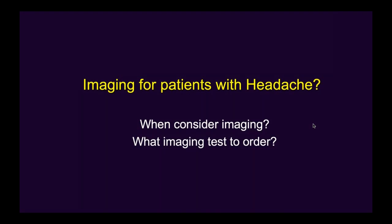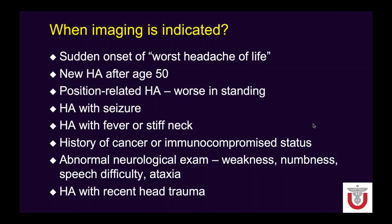So when to consider imaging for a patient with a headache, and what imaging test to order? For uncomplicated primary headache, we don't need imaging. But when to consider it? There are certain atypical features — for example, sudden onset of the worst headache of life, which typically flags possible aneurysm rupture or subarachnoid hemorrhage. A patient who never had a headache but develops a new headache after age 50 is also a concerning finding to consider.